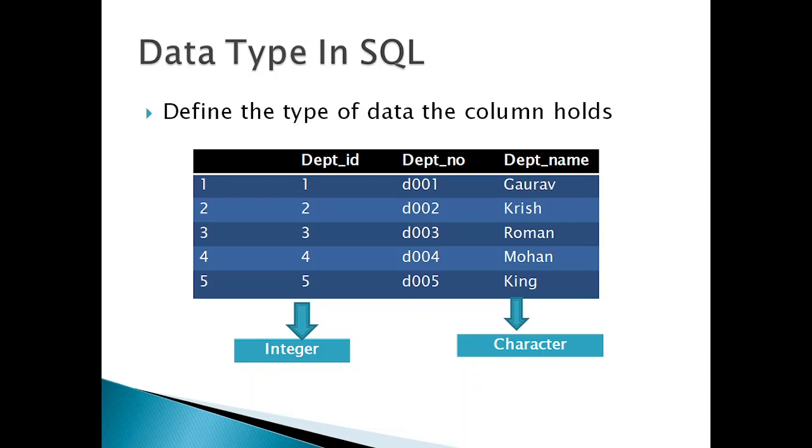Data type means the type of data is basically a data type. In SQL, there are three major types of data. We read about that. So data type, data type define the data type, the column holds.